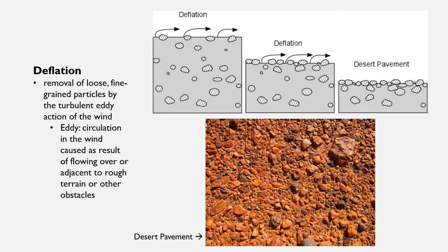Wind erodes the earth's surface by a process called deflation. Deflation is the removal of loose, fine-grained sediments by turbulent air circulation that develops when the wind flows alongside or over rough terrain, such as a mountain. This air circulation is known as an eddy, and they generally form on the lee or downwind side of these obstructions. The circular motion allows for fine-grained sediments to be lifted and blown away, just like the dust we see in the air on a windy day.